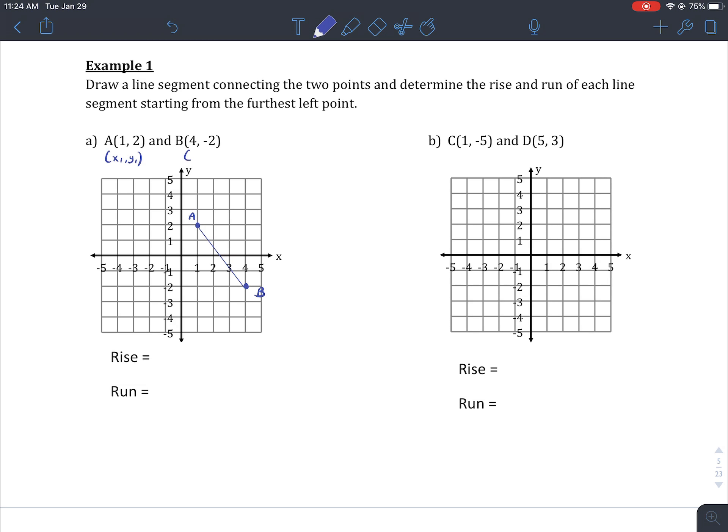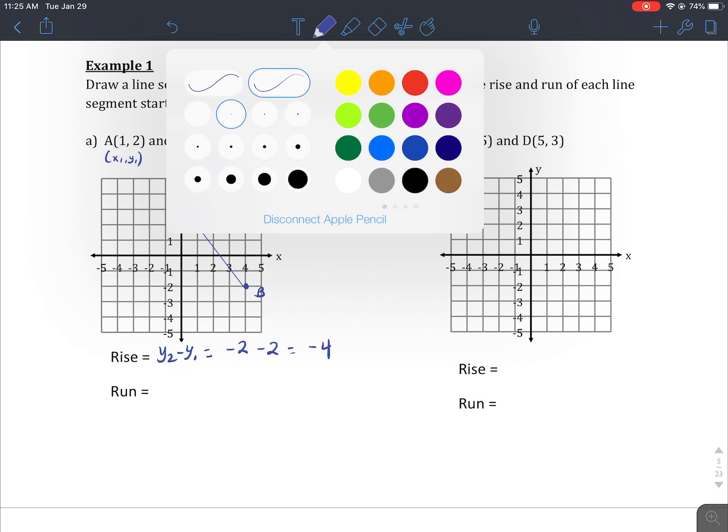Now I'm starting from the furthest left point, so A has to be x1, y1, and B is x2, y2. Now my rise formula is y2 minus y1, so if I plug in the numbers, we're going to get negative 2 minus 2, and that's going to tell me it's negative 4. Now really what that rise means is starting from that leftmost point of A, we're going to go down 4 units to get on the same level as point B.